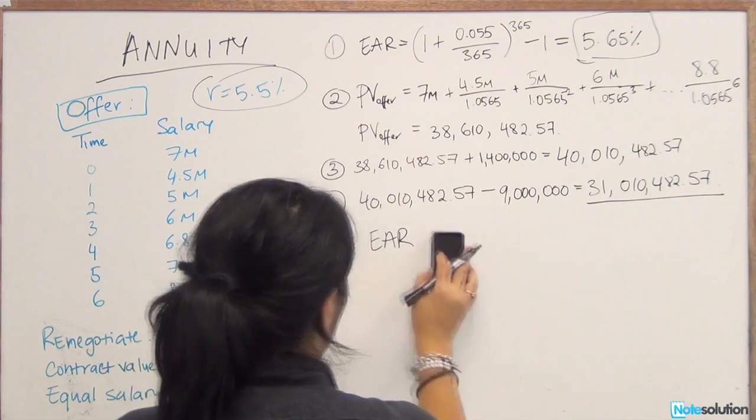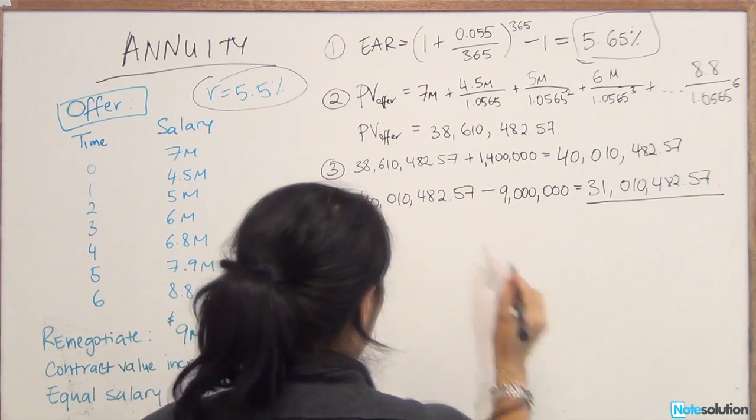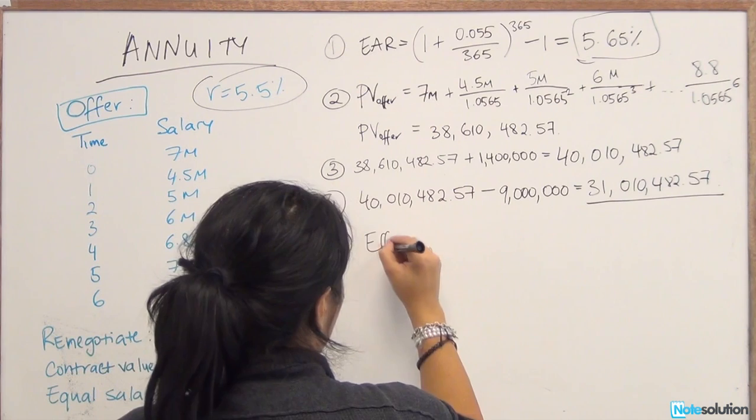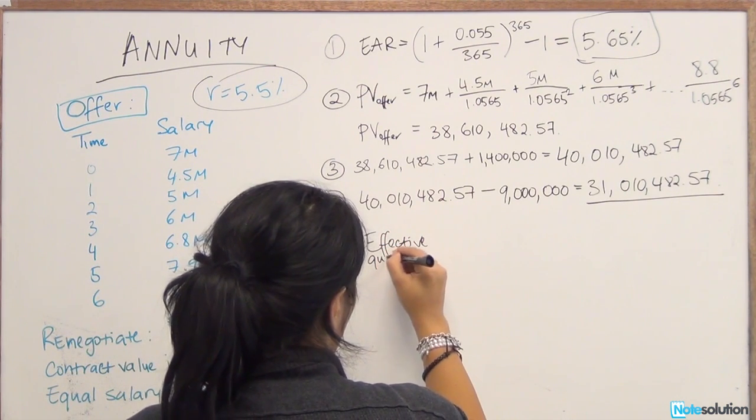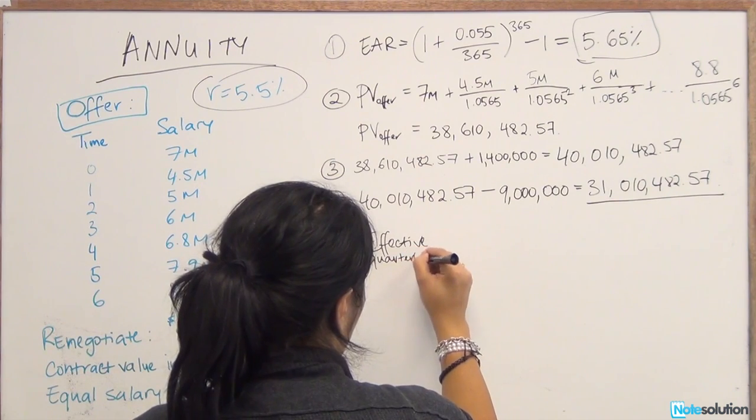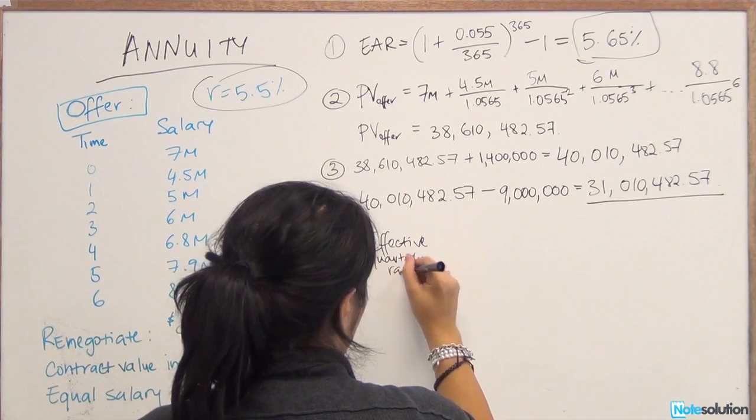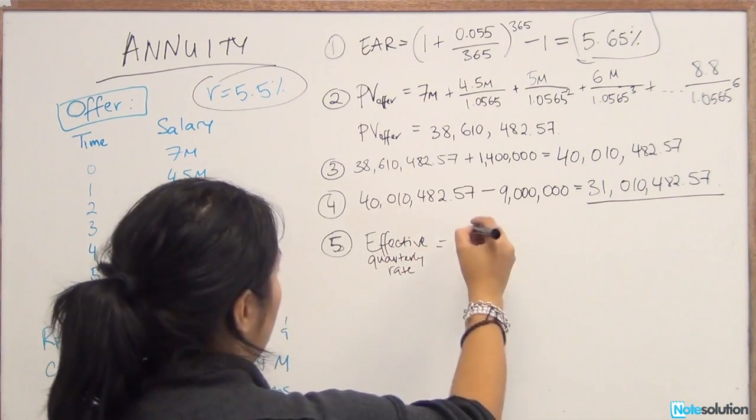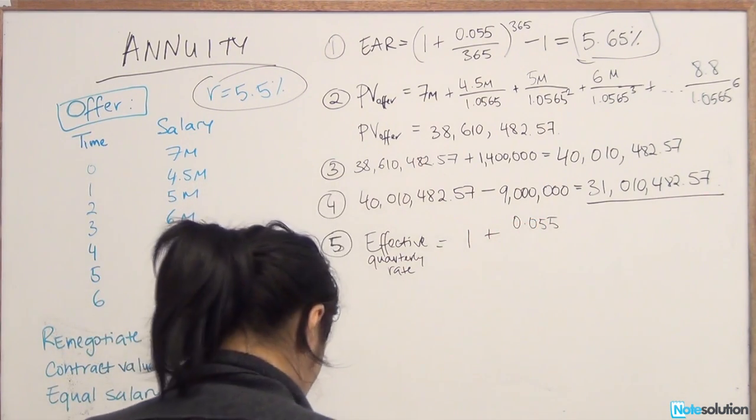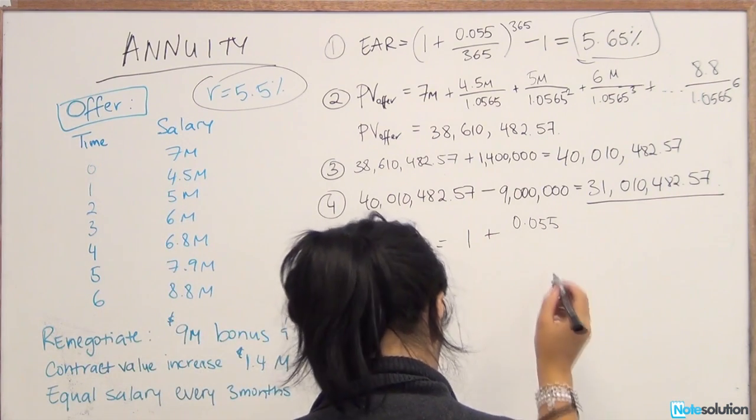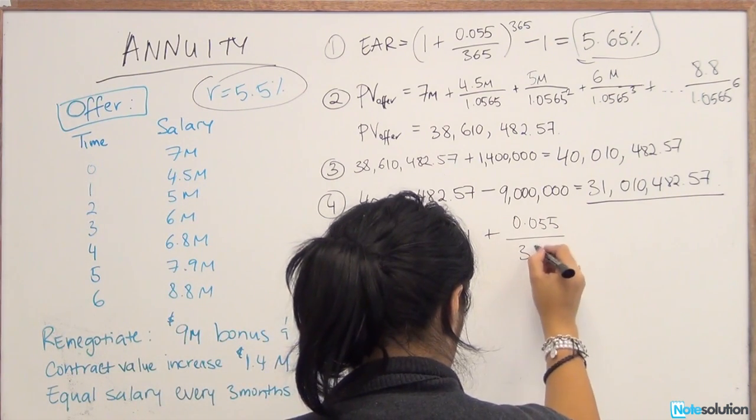So we're going to take our daily rate, 0.055 divided by 365.